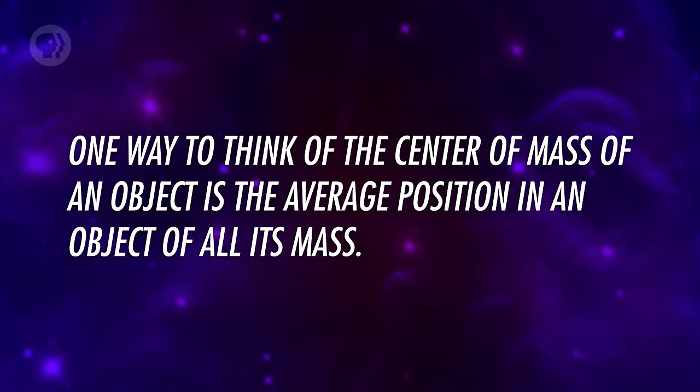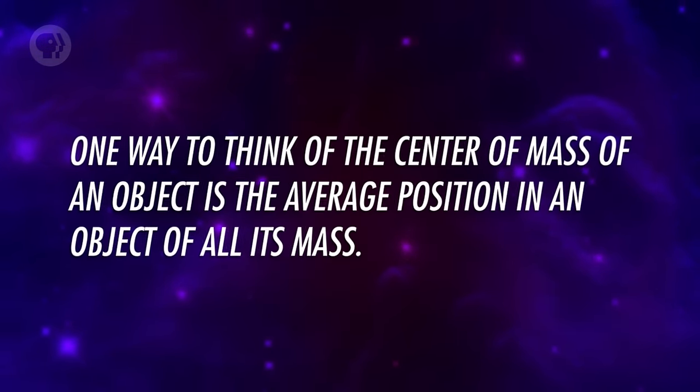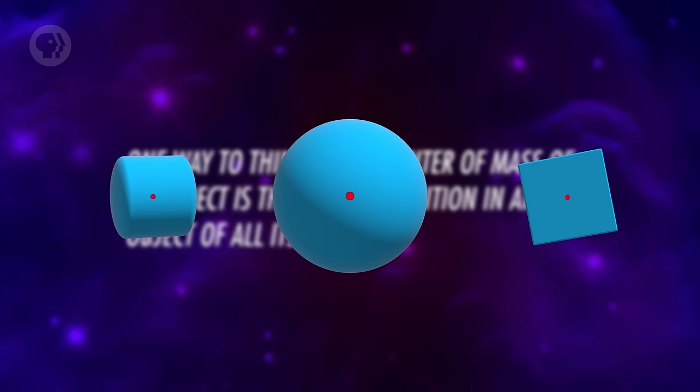Gravity is a force, and it weakens with distance. An important thing to note is that we measure gravity from the center of mass of an object, not its surface. One way to think of the center of mass of an object is the average position of all its mass. For an evenly distributed sphere, that's its center. Right now, unless you're an astronaut, you're about 6,400 kilometers from the center of the Earth.